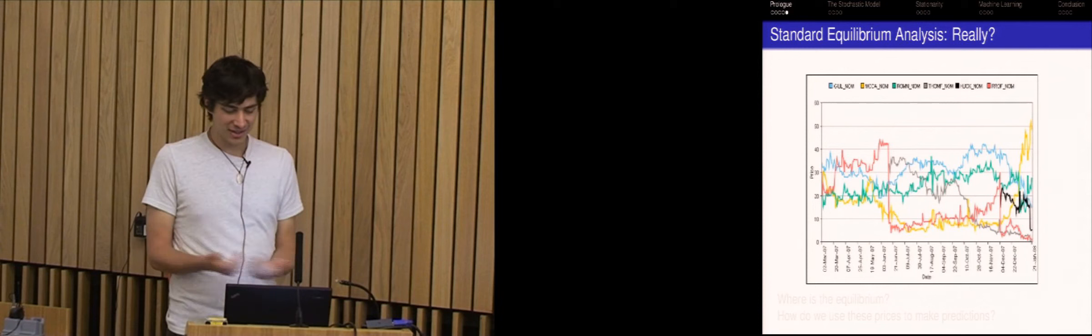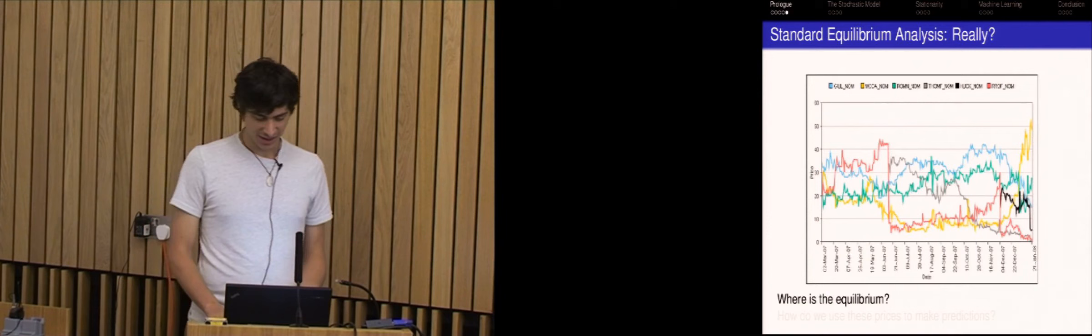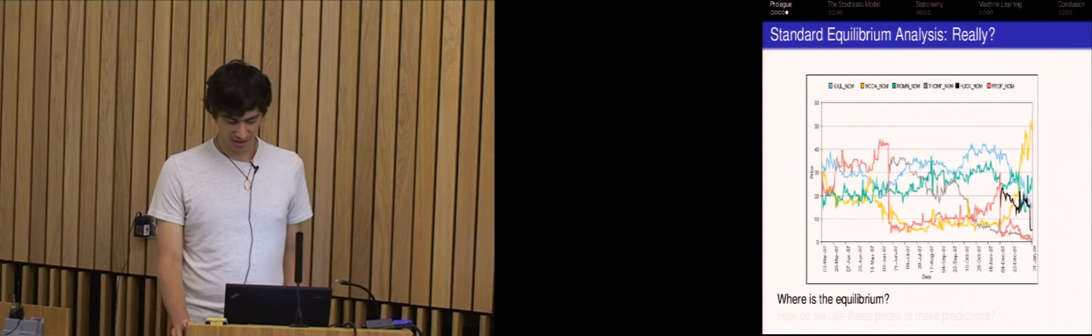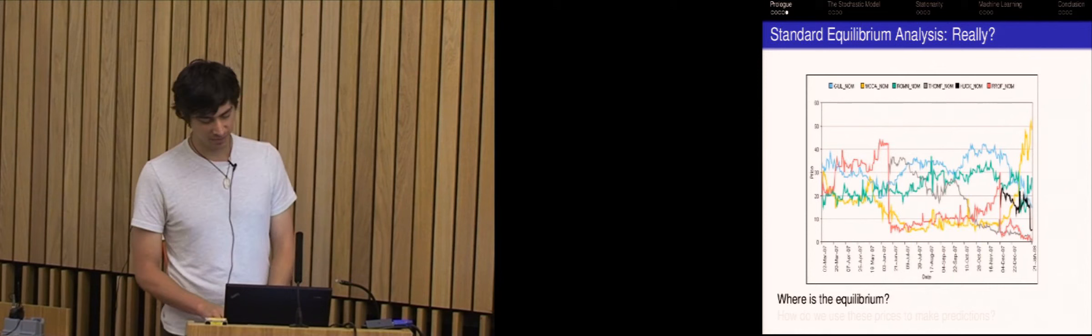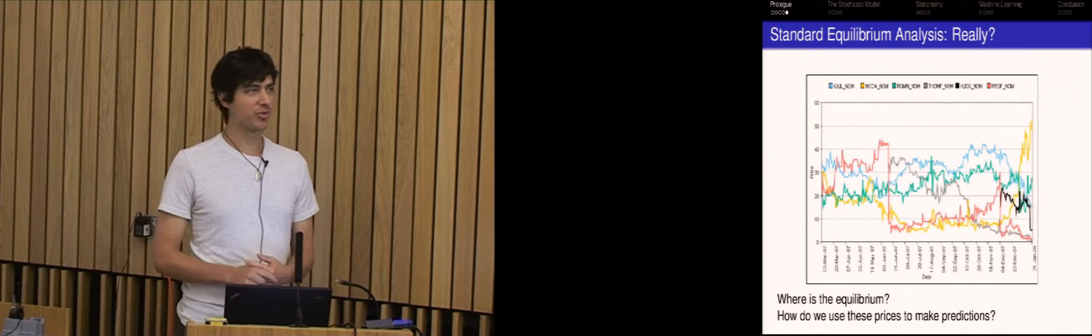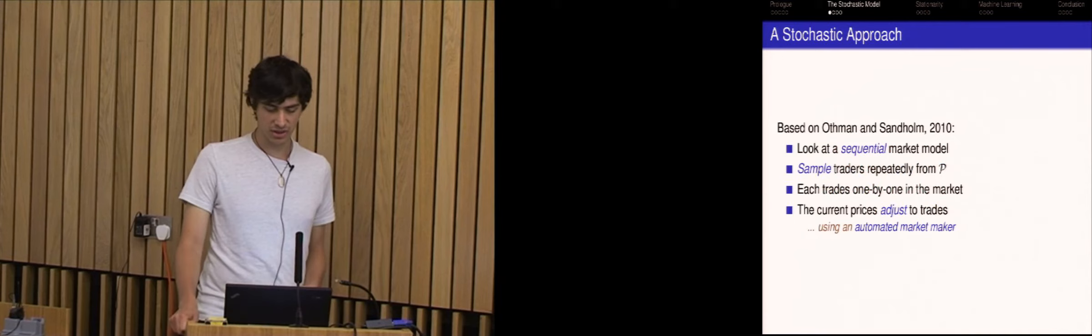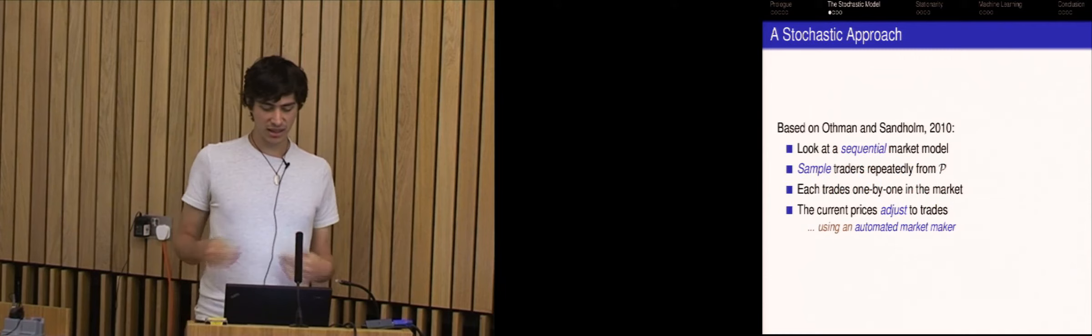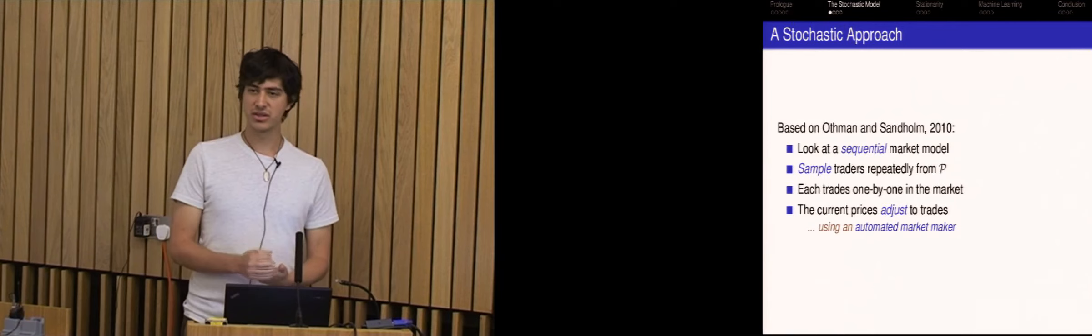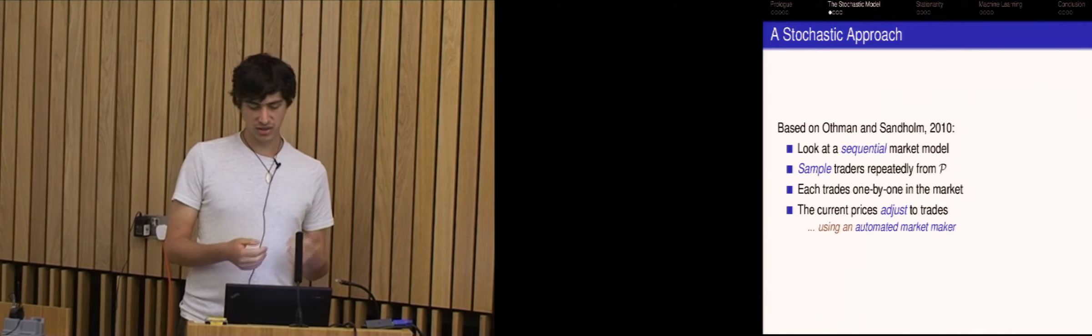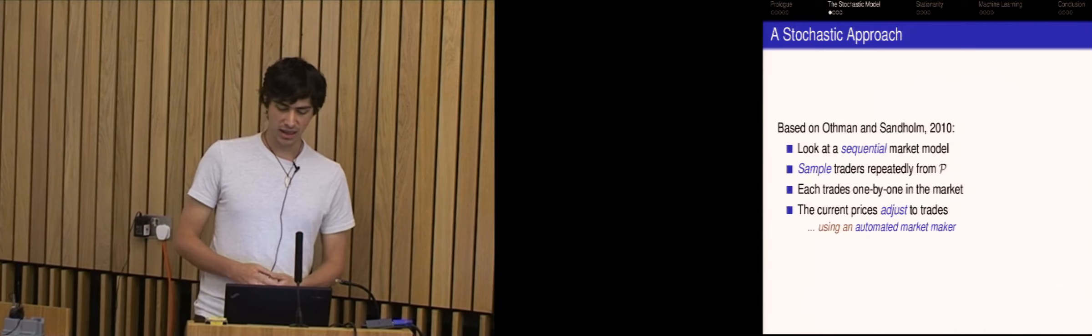But we're actually going to bring this whole approach into question. And if you look at some markets, it's not quite clear where the equilibrium is. And this is actually the GOP primary election in the US, which was particularly crazy this time. And when you look at things like this, it's not immediately clear how to use these prices to make predictions. And the equilibrium doesn't necessarily pop out. So this was sort of our motivation. We took instead a stochastic approach. And this is actually based on a paper by Osten and Sandholm.